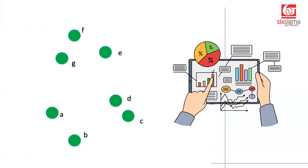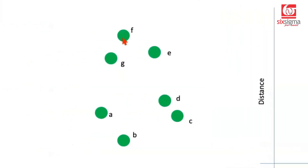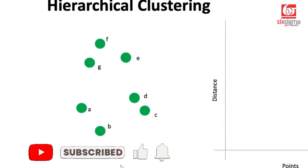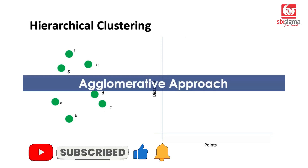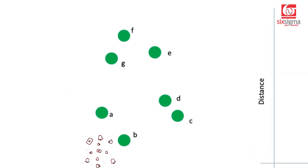Let's say we have our data available in a multi-dimensional space in the form of these points. For ease of understanding, we're keeping it limited to seven points to convey the core idea behind this approach. The specific approach we're going to take for hierarchical clustering is known as the agglomerative approach. It says that when we have our data in a multi-dimensional space, we begin by assuming each point to be a cluster in itself.